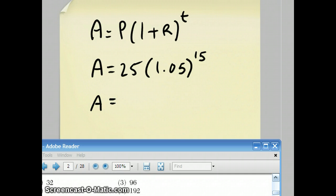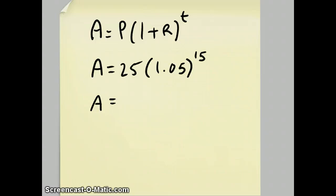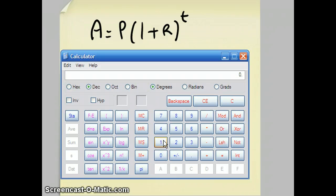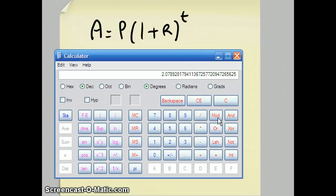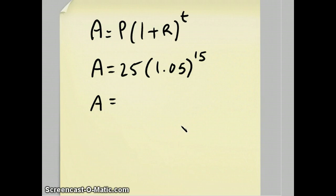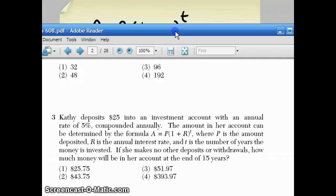The other thing to watch out for here is not to multiply the 25 times the 1.05. I'll bring up a calculator to do 1.05 to the 15th power. I guess you go 1.05 raised to the 15th power, and we get this number, 2.08 approximately. Finally, we multiply that number times 25 to get our answer 51.97, which was choice number 3.